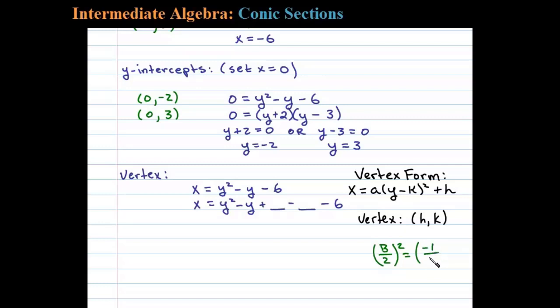So in this case b is negative 1, so negative 1 over 2 squared gives us 1 fourth. And so that's the number we're going to use to complete the square. We'll add 1 fourth and subtract 1 fourth.